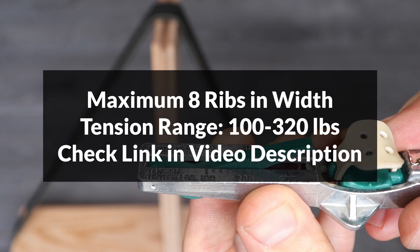This Krickit 2 gauge can be used on belts that have up to 8 ribs in width and a tension between 100 and 320 pounds. In case you're interested in getting one, I'll have a link to it down in the video description.